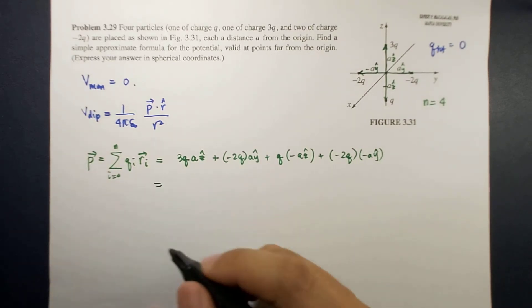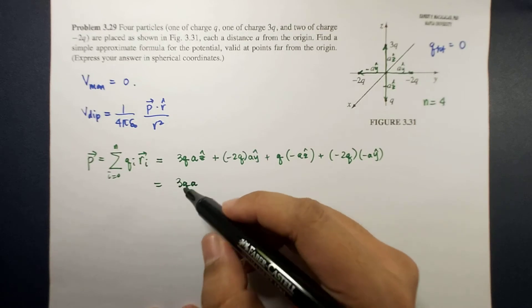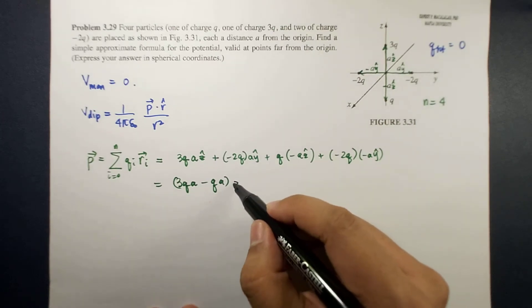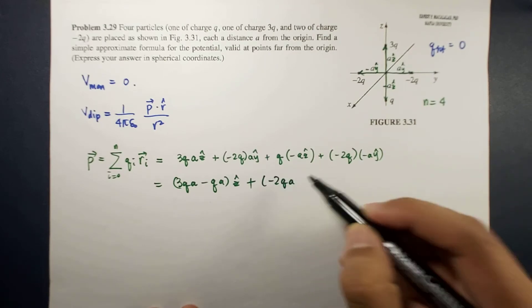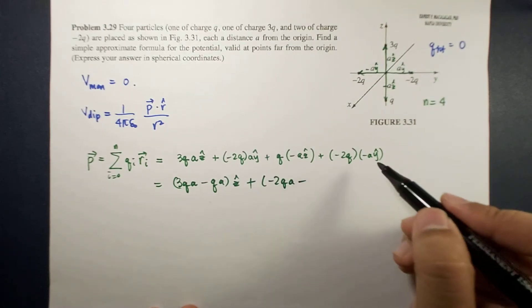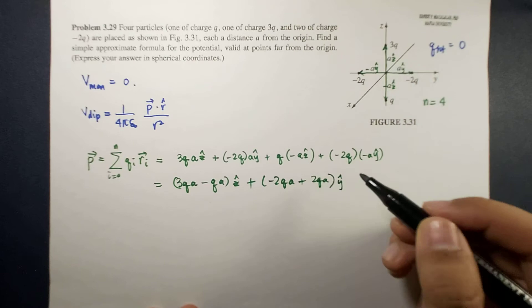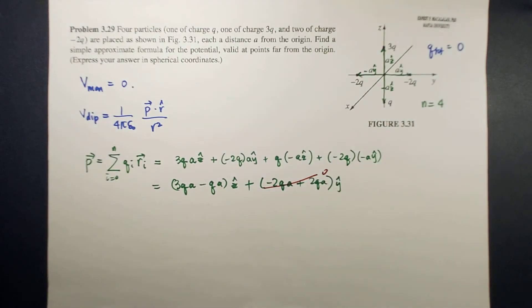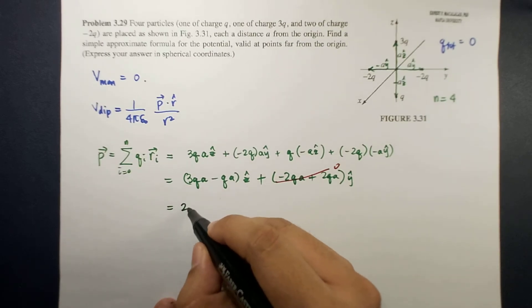Simplifying this, combining the z components, we have 3qa minus qa z hat. Plus negative 2qa plus 2qa y hat, and this is zero. This is now equal to 2qa z hat.